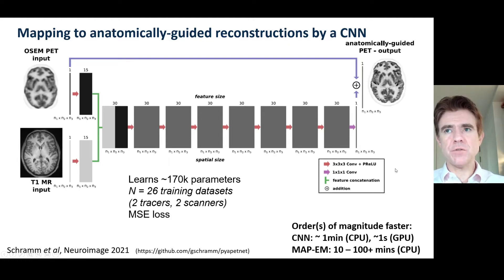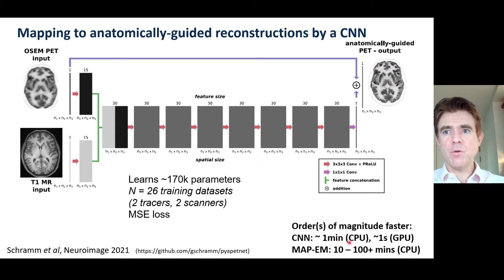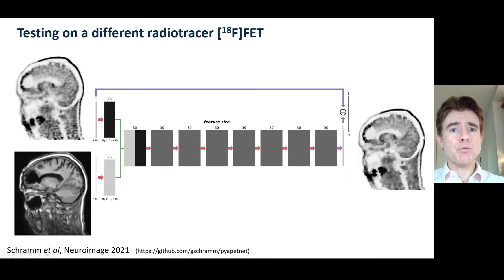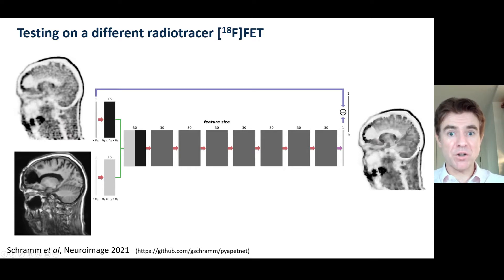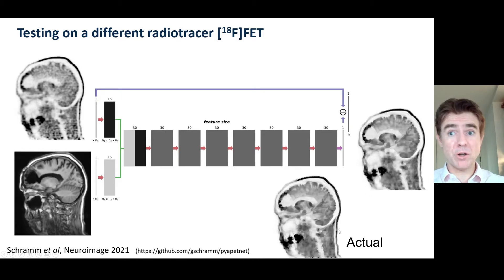They gained a massive acceleration because what they're doing now is just one CNN to go from the standard OSEM to the MR-guided reconstruction, whereas normally such an MR-guided reconstruction would take tens of minutes at least on a CPU, whereas here they could do this in a minute on a CPU, or one second on a GPU. Impressively, they also demonstrated it by testing it on a different radiotracer — F18 FET used for oncology imaging. Here we've got a test subject with an abnormality, and at the output you can see the abnormality is still there, and what they get in the MR-guided predicted output is a result that looks remarkably close to the genuinely reconstructed MR-guided reconstruction.